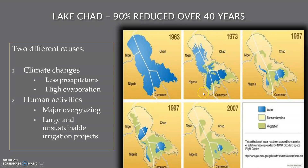As you can see by the timeline, in 1973 — ten years later — a significant reduction in the size of the lake occurred. In 1987, even more of a reduction, to the point that it split into three different lobes. In 1997, again three separate water bodies, and in 2007 only two small areas contain water.